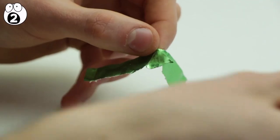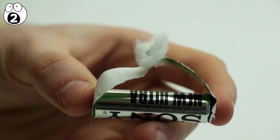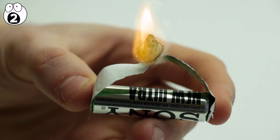Now press both ends of the paper to the poles of the battery and within seconds it should generate enough heat to ignite the cotton.